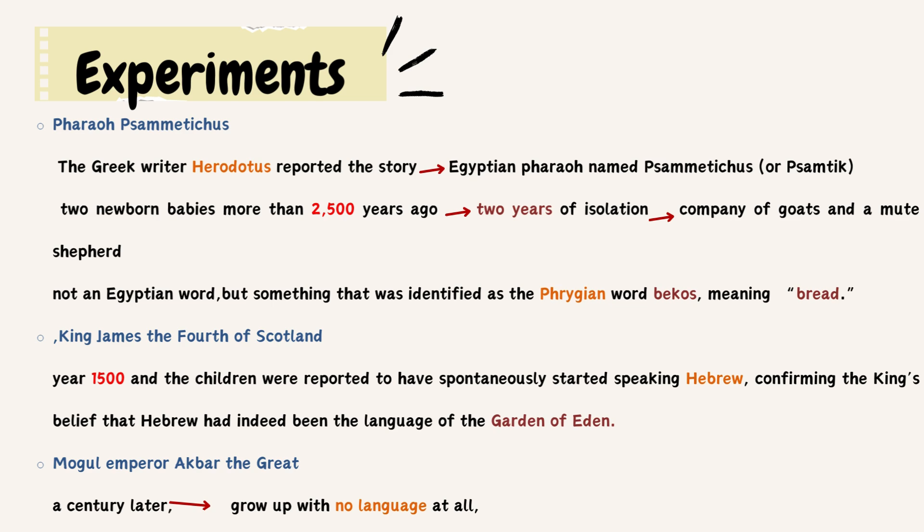If you remove the ending of the word 'bekos' and are left with 'bek,' it resembles the sound a goat makes — 'baa.' King James IV of Scotland carried out a similar experiment around the year 1500, and the children were reported to have spontaneously started speaking Hebrew, confirming the king's belief that Hebrew had indeed been the language of Eden.